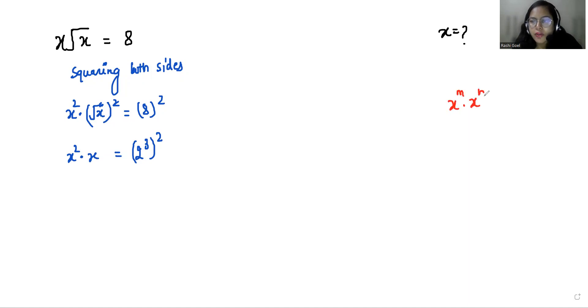According to exponent rules, x to the power m times x to the power m equals x to the power m plus m. And another exponent rule, a to the power m to the power m equals a to the power mm.